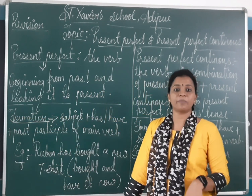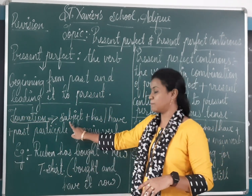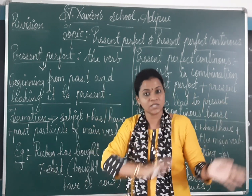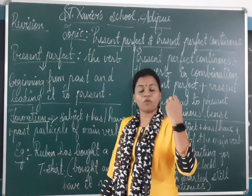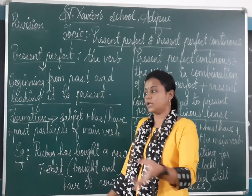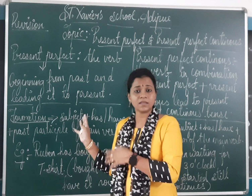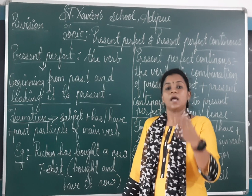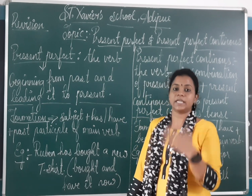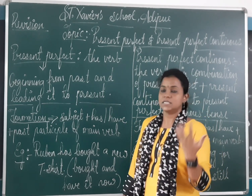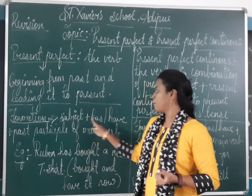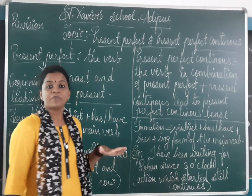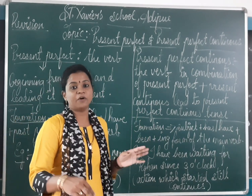Now what is the formation of present perfect tense? Subject — that is the main part of the sentence, the one who is doing the action — is our subject. So subject plus has or have. This has and have is for our present perfect tense.